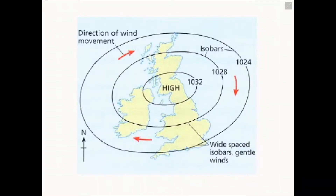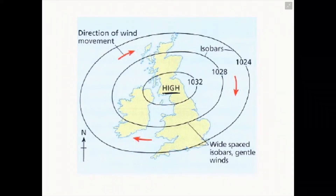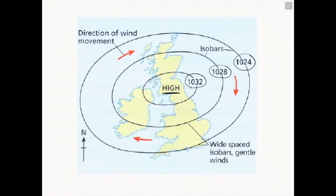When looking at an anticyclone on a synoptic chart, the first indication we are experiencing an anticyclone is through the high pressure indicated by the 'HIGH' in the centre of a synoptic chart. The isobar lines will also have a value on them, and any value greater than 1004 indicates that we are experiencing high pressure.